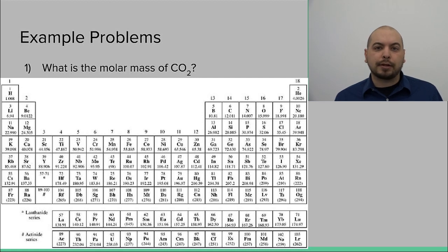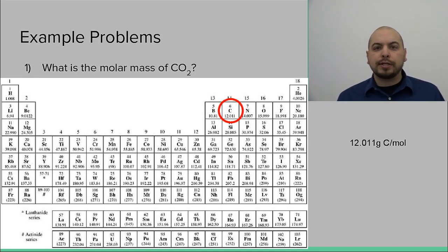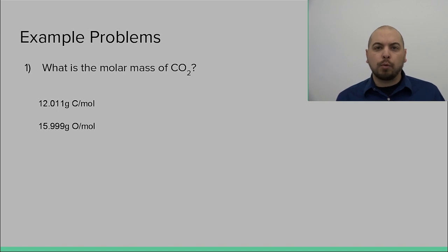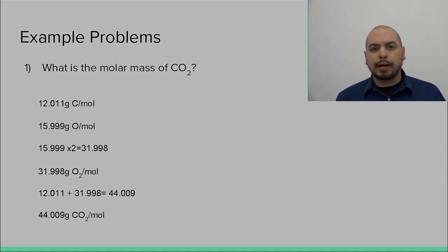So let's get right into an example of how to calculate the molar mass of a compound. We're going to look first at carbon dioxide. Carbon dioxide is a molecular compound because it's comprised of only nonmetals — carbon and oxygen. We're going to identify the molar mass of each atom: carbon weighs 12.011 grams per mole and oxygen weighs 15.999 grams per mole. With carbon dioxide, we have one carbon atom but two oxygen atoms. So we add our 12.011 to 15.999 times two, and we get a total molar mass of 44.001 grams per mole.